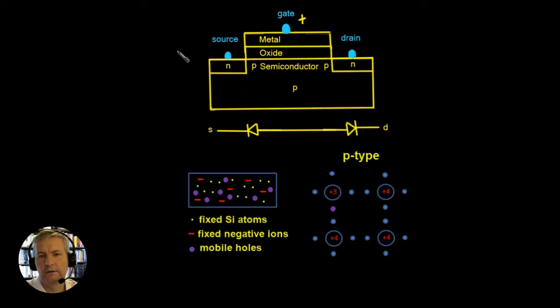So the route for the current flow should be down through the source across this junction and underneath here across this junction and out through the drain.